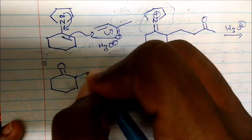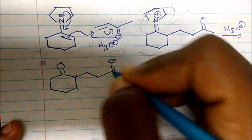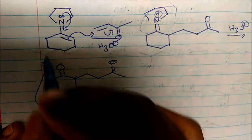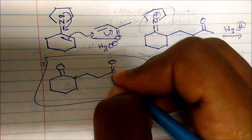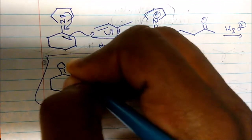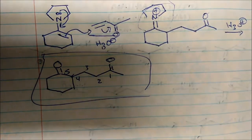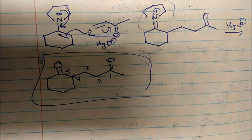When we hydrolyze — throwing it into acid — the enamine converts to a ketone. Our product has one, two, three, four, five carbons between the carbonyls. So it's a 1,5-diketone, or 1,5-dicarbonyl.